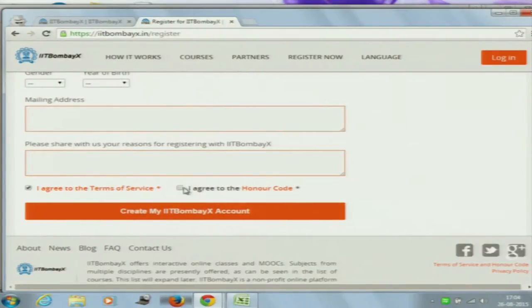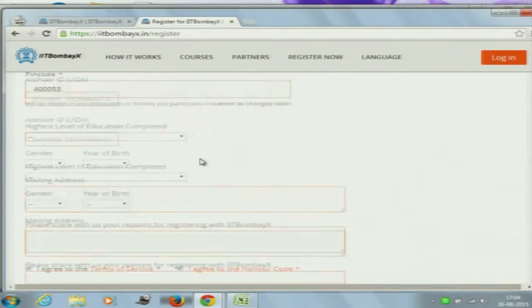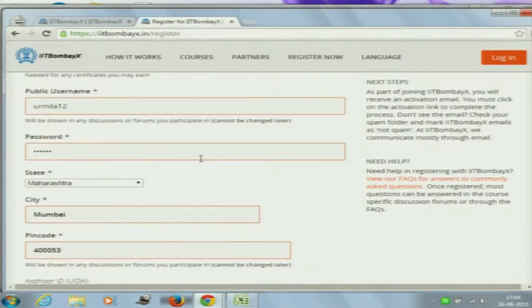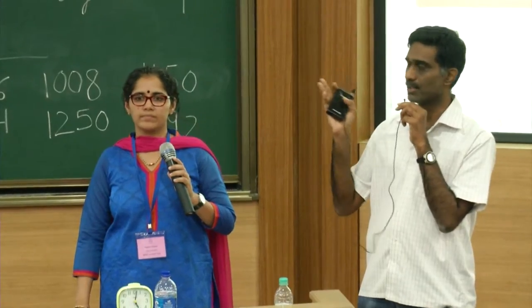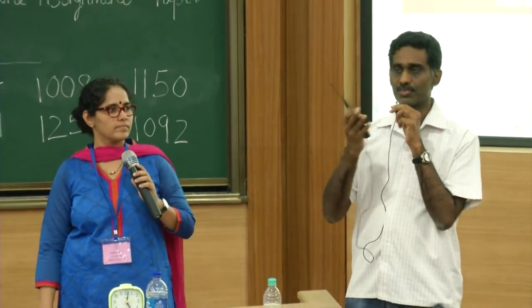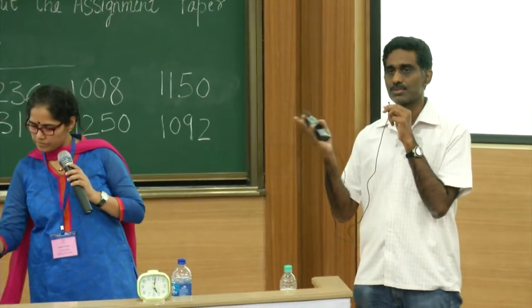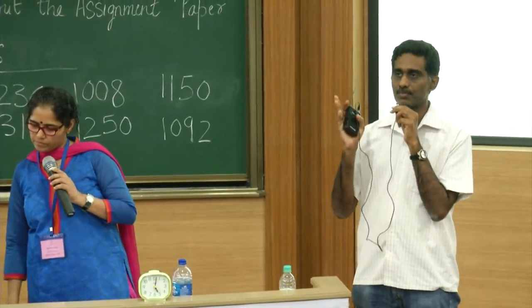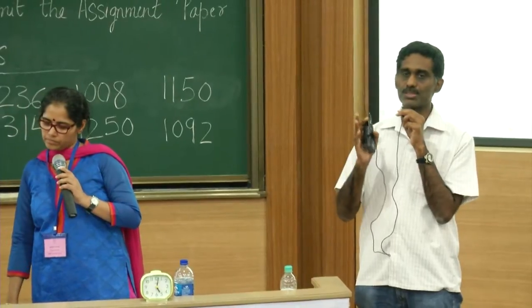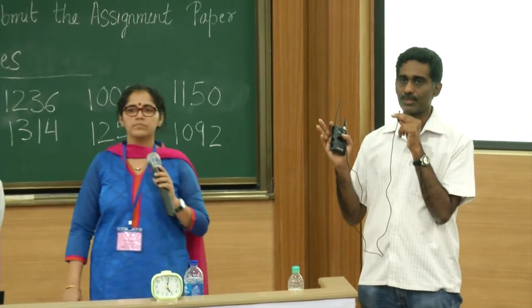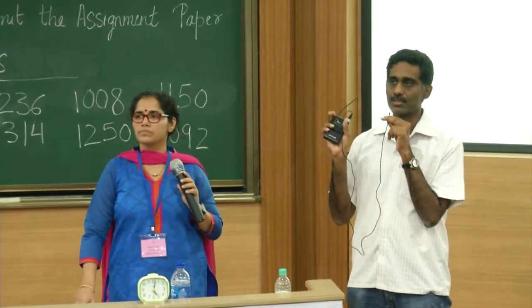If you give an email or user ID which is already existing, it will tell you. But make sure you pick up some user ID, preferably with your initials. If it is not available, then you choose one, two, three, or four. But preferably use something with your initials in the user ID.